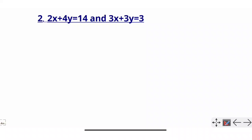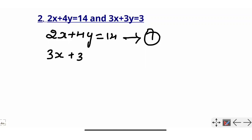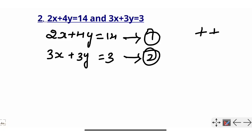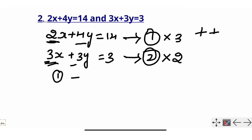Now the next problem: solve 2x plus 4y equals 14 and 3x plus 3y equals 3. Write equation 1 as 2x plus 4y equals 14, and equation 2 as 3x plus 3y equals 3. Since the x-coefficients are unlike, we need to cancel the x variable. Multiply equation 1 by 3 and equation 2 by 2, then subtract.